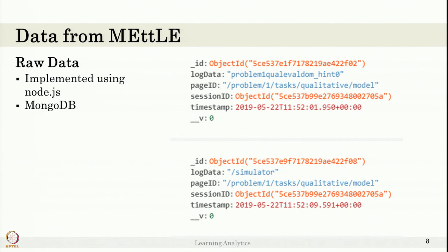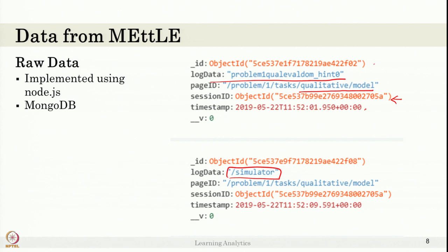Here are a couple of examples of data stored from METEL interactions. In this log, the data shows the student is on the problem page, going to a task in the qualitative model. The object ID is the identifier for this particular session, along with the student ID and timestamp. We have student ID, timestamp, session ID, which problem the student is working on, and which page they are on. The page indicates the action — the student is doing the qualitative model action and looking at a hint. After that, the student is still in the qualitative model and moves to the simulator.